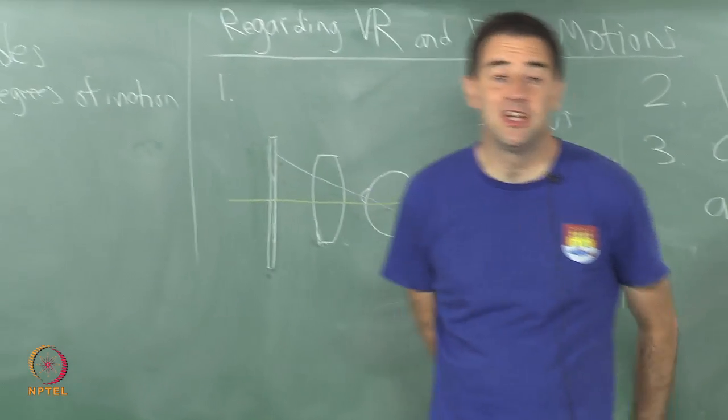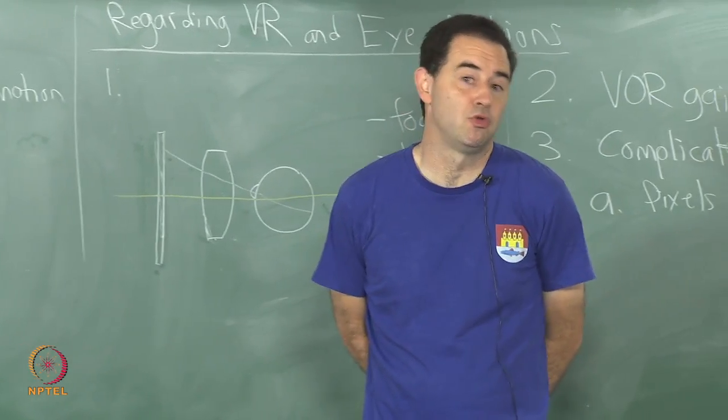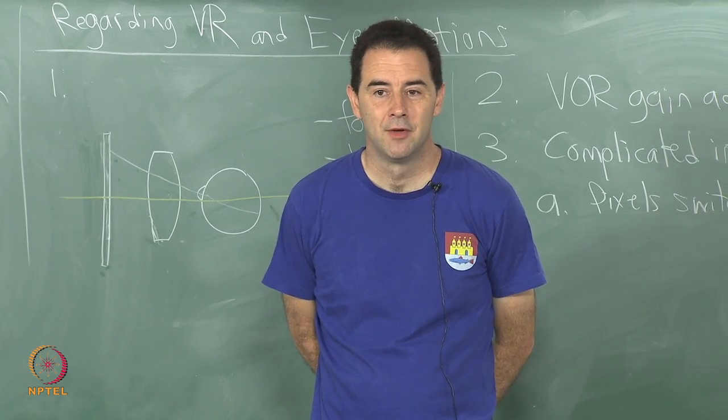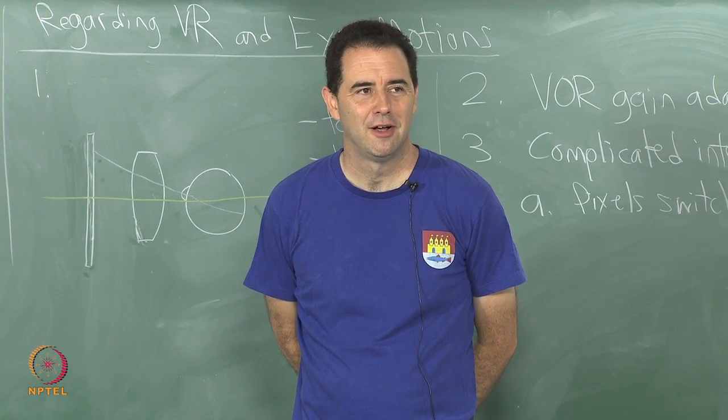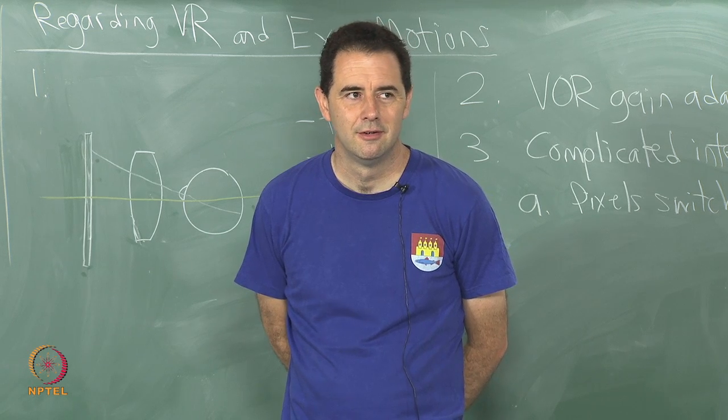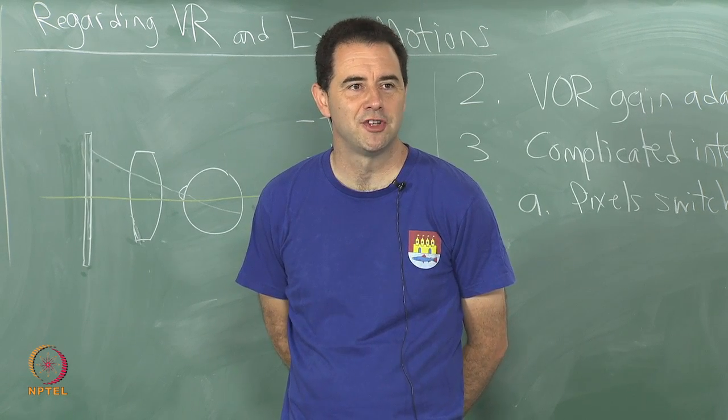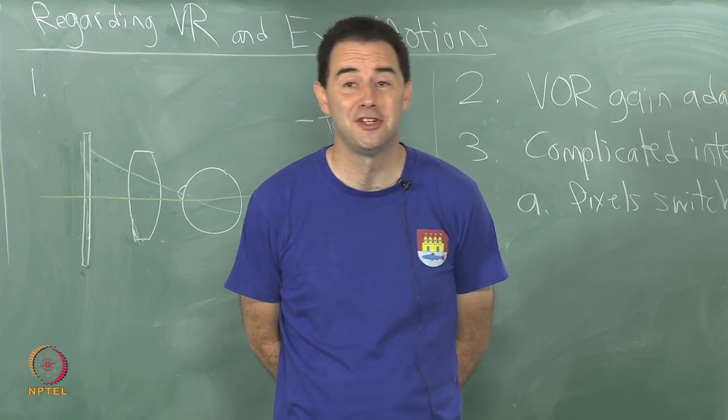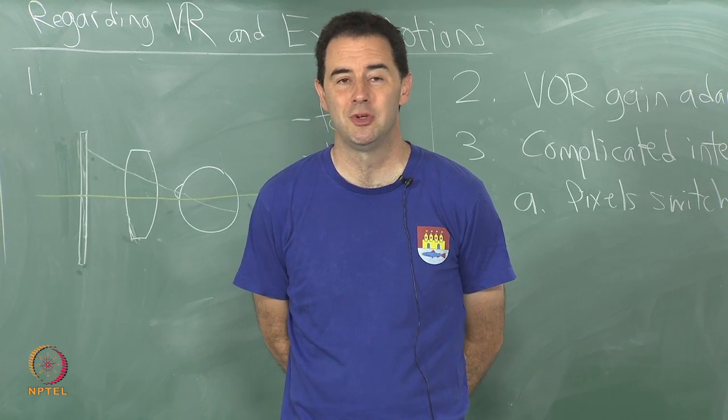If it is an LCD display it could take up to 20 milliseconds to switch. If you are running at 60 hertz, how long is the time between frames? 16.67 milliseconds. So it could take longer than an entire frame just to switch the pixels.